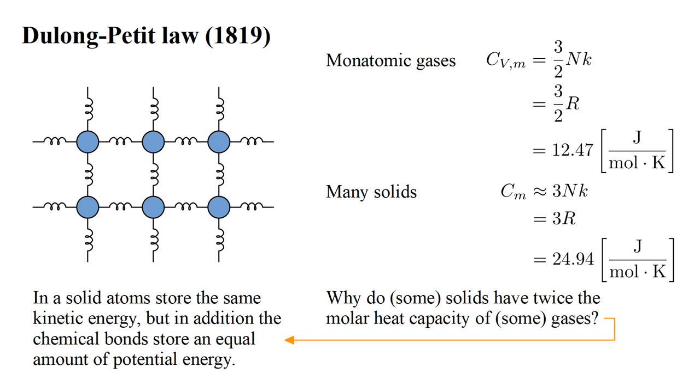In the third video of the mechanics series, we saw that when a mass on a spring oscillates, the kinetic and potential energies of the system fluctuate sinusoidally, such that the average kinetic and potential energies are equal. So, an explanation for why some solids have twice the molar heat capacity of some gases is that in a solid, atoms store the same kinetic energy as they would in a gas state at the same temperature, but in addition the chemical bonds store an equal amount of potential energy.